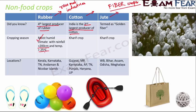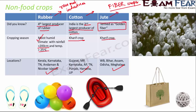Rubber needs moist humid climate with rainfall greater than 200 centimeters and temperature greater than 25 degrees Celsius, and is grown in Kerala, Karnataka, Tamil Nadu, and the Andaman and Nicobar Islands. Cotton is a kharif crop needing high temperature and light rainfall, grown in Gujarat, MP, Karnataka, AP, Tamil Nadu, Punjab, Haryana, and UP. Jute is a kharif crop grown in West Bengal, Bihar, Assam, Odisha, and Meghalaya. Jute is called the golden fiber due to its color.